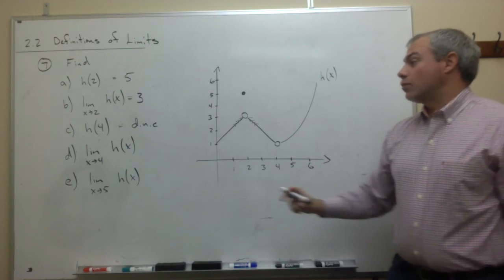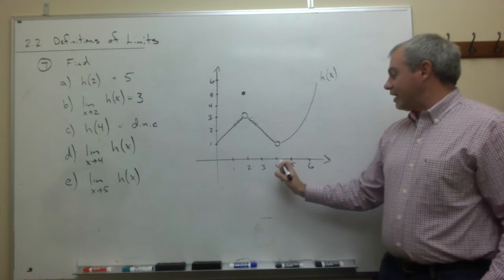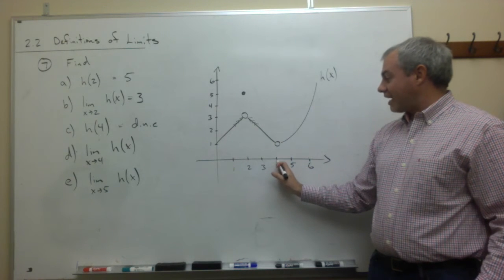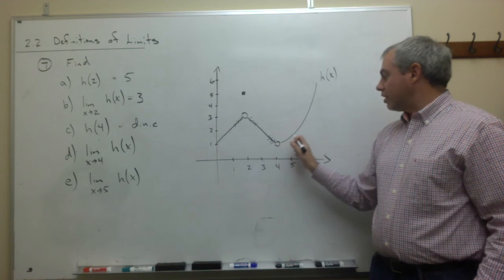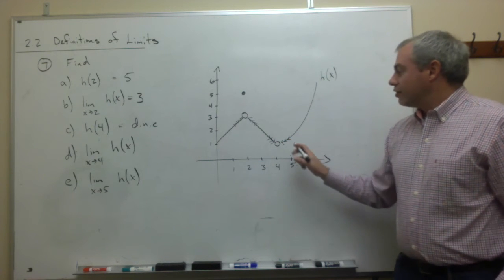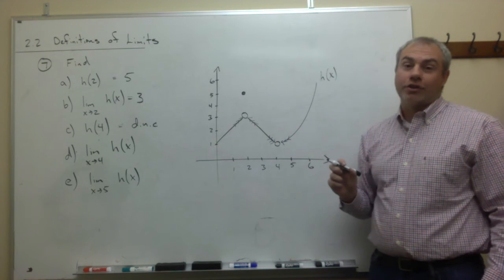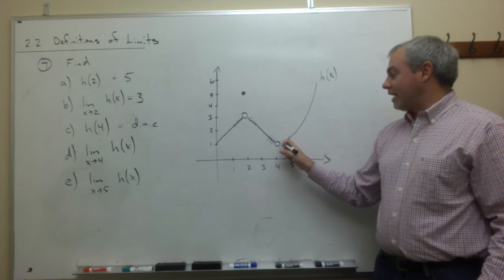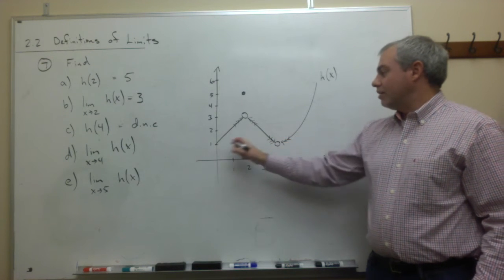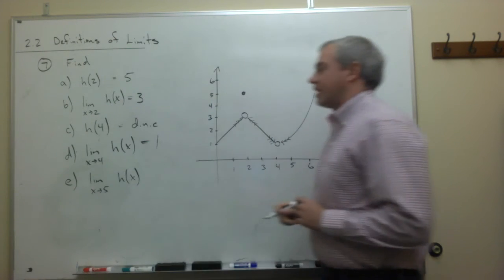Part d, we ask what's the limit as x goes to 4 of h of x. In other words, as we come at the x value 4 from the left, getting closer, from the right, getting closer, could we make a guess about what we think that functional value would be without seeing that functional value? And we would make a guess, and the guess would be 1. So we'd say that the limit as x goes to 4 of h of x is 1.